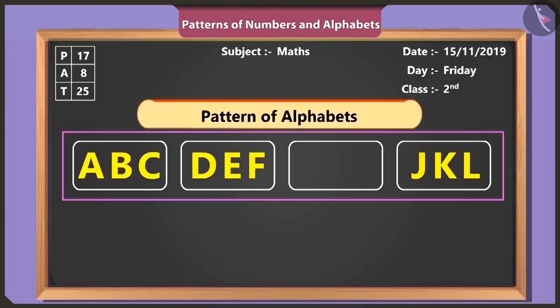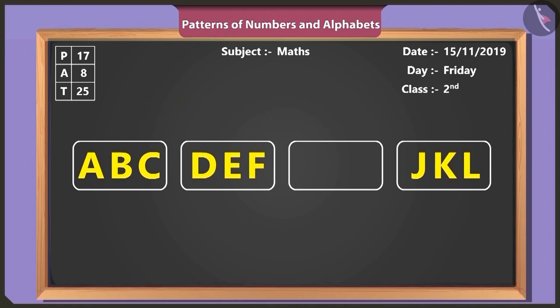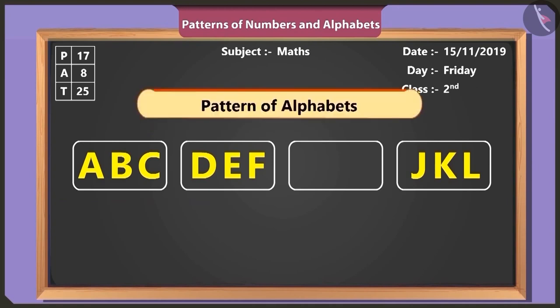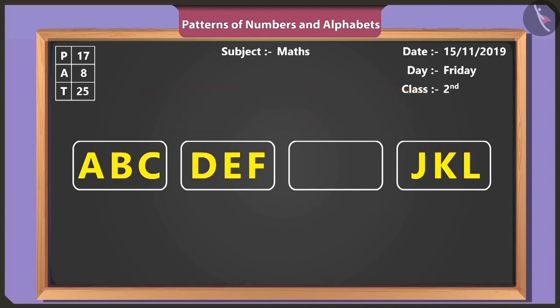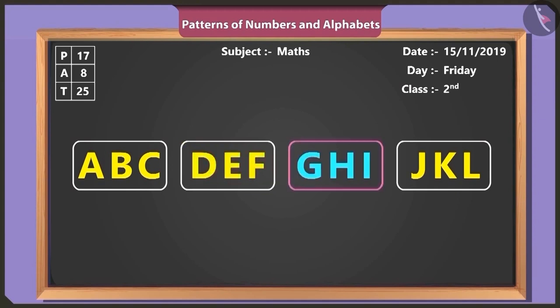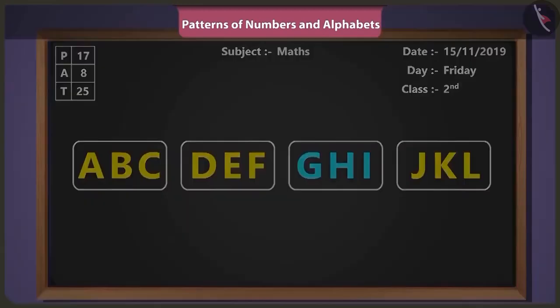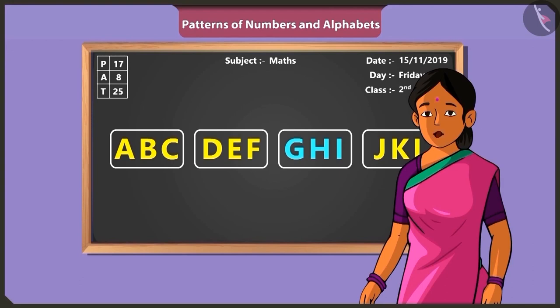Now solve this puzzle made of an alphabet pattern. This pattern is made of English alphabets A, B, C, D, and each term of this pattern has three alphabets. So following A, B, C and D, E, F, the next term will be G, H, I. Because it is followed by J, K, L. Well done, Binny.